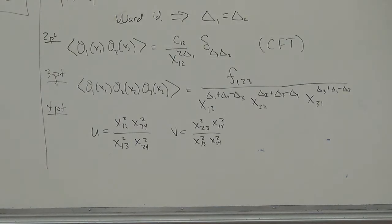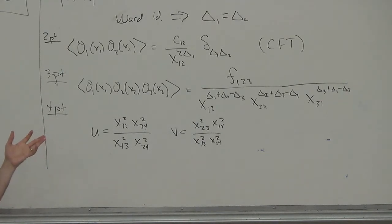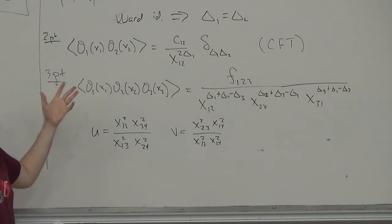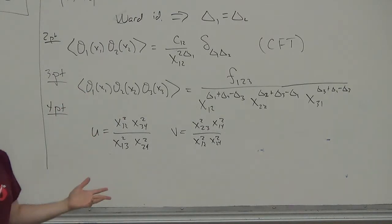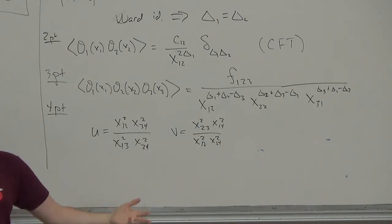Question about the constants c_{12} and f_{123}: To find them in a theory with a Lagrangian, you have to compute two-point and three-point functions. In a weakly coupled theory, you get a power series in the coupling from Feynman diagrams. One computation was a two-point function of the Lagrangian operator F^2 in a gauge theory, which at leading order gave a particular result. In general interacting theories, you get a series of corrections.